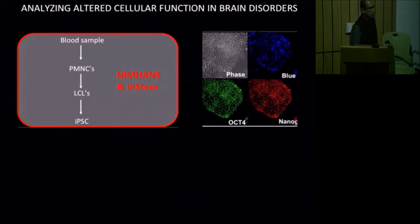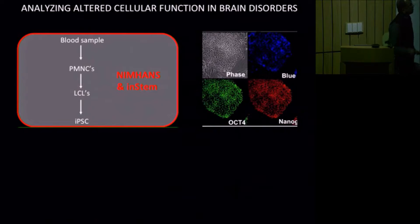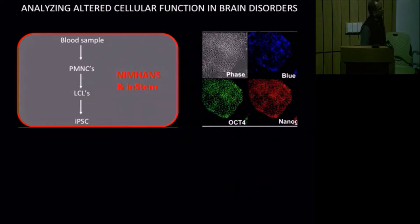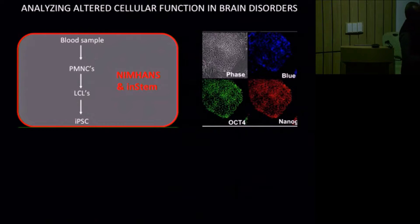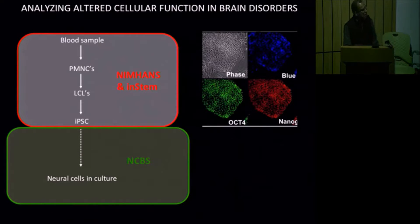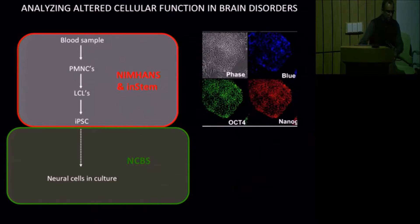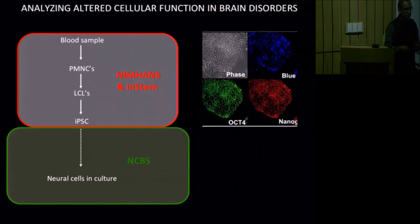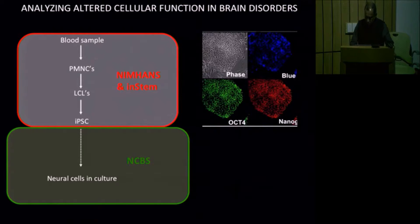The approach is essentially this: you start with a sample of peripheral cells and, using modern stem cell technology, you convert it into a redifferentiated iPSC cell. Once you have an iPSC cell, you can use available methods to convert these cells into neural cells in culture. These cells can then be studied in great detail in your lab to ask questions about how the cells are wired together and how they may function.